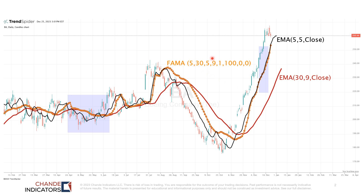Notice that when Boeing was rising rapidly, FEMA behaved like a five-day EMA with a five-day offset, whereas in this area of consolidation, FEMA behaved like a 30-day moving average with a nine-day offset.